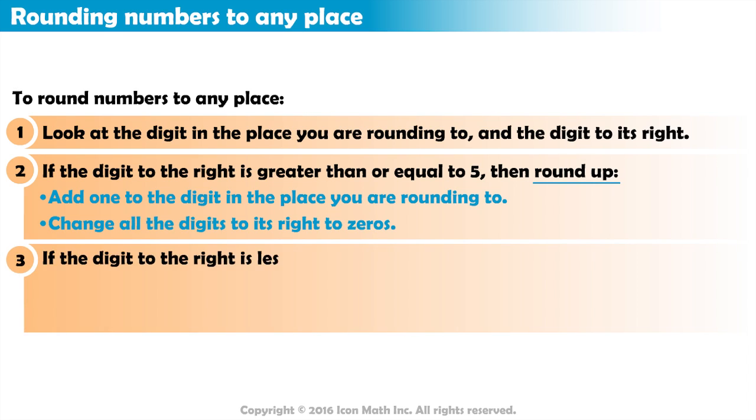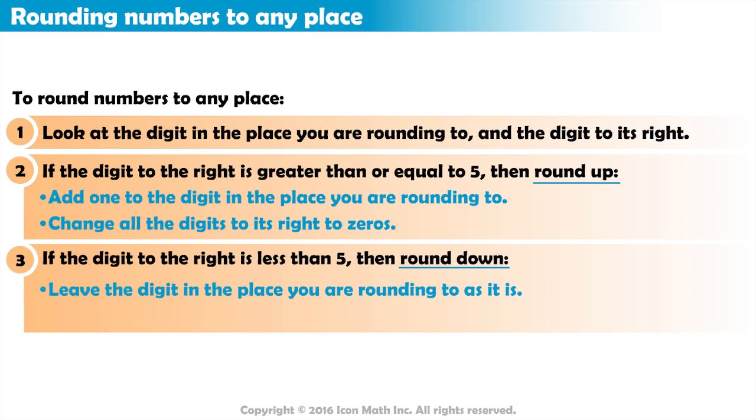If it is less than 5, we round down, by leaving the digit in the place we are rounding to as it is, and change all the digits to its right to zeros.